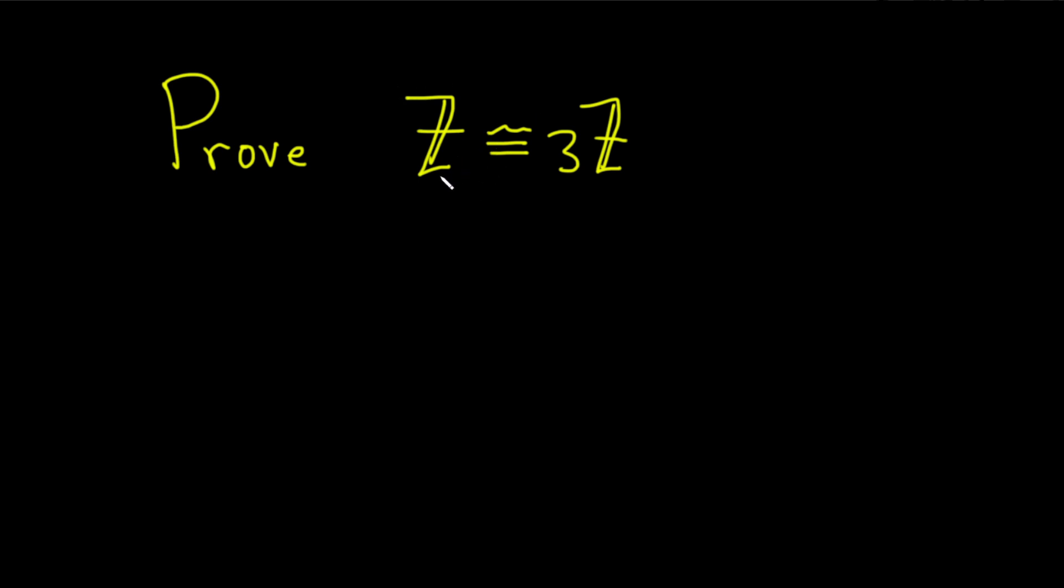We're treating these as groups. So this is the group of integers under addition, and this is the group of all multiples of three under addition. Let's go ahead and go through the proof.